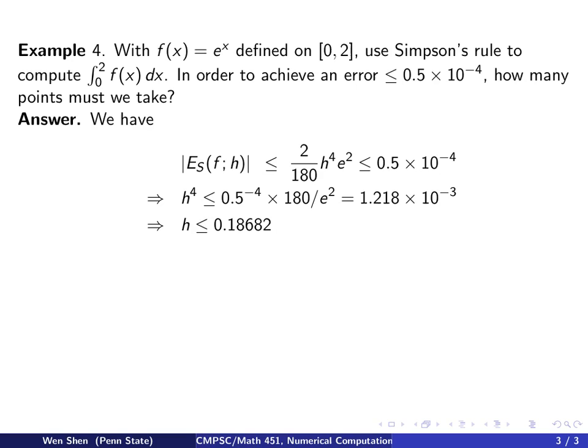And then, let's take the fourth root. And then, we find out h has to be less than 0.18, something like that. And now, remember the relationship between h and n. So, we know n exactly equal to b minus a over 2h. So, putting the h value you just found here, and you find out that n shall be approximately equal to 6.